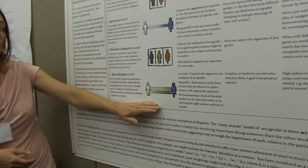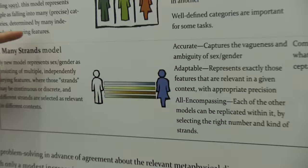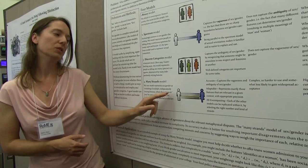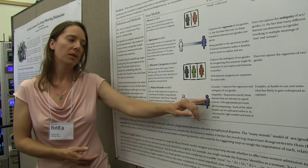But my model here, I think, gets all the virtues of the others and increases the complexity. What it does is capture the vagueness, but also the different kinds of features that are relevant, by saying there can be many different strands along which people vary — different kinds of features of our personalities and our bodies that make us either more masculine or more feminine. And we can vary so that we're feminine on one strand and masculine on another.